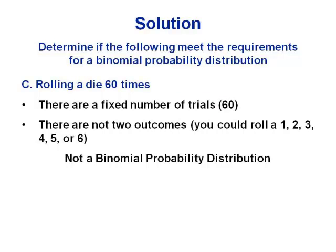Rolling a die 60 times: there are a fixed number of trials, but there are not two outcomes — you have six outcomes, one through six. So that would not create a binomial probability distribution. However, you could reframe this to be binomial. If you're only interested in how many times you roll a four, you could frame it as two categories: you either roll a four or you don't. But if we're just recording whatever number we roll, that's too many possibilities — not binomial.